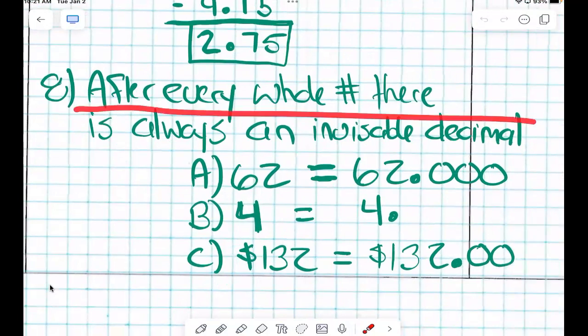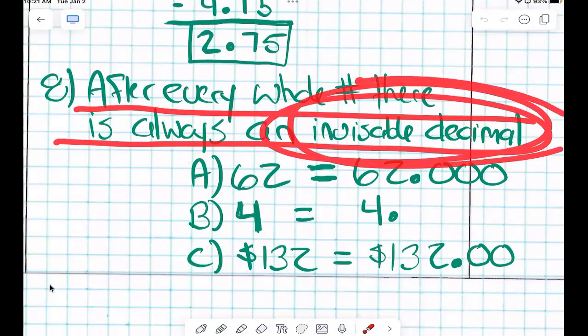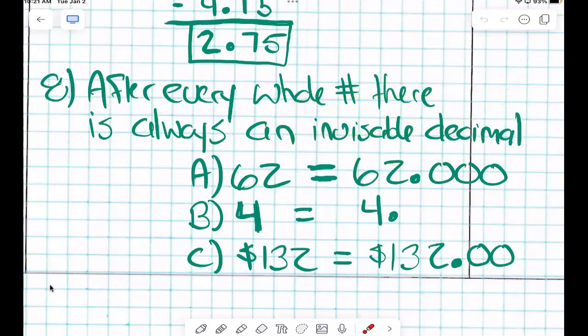After every single whole number, there's always an invisible decimal point. An invisible decimal point. So like, for example, the number 4 can technically be written as 4 with a decimal point.